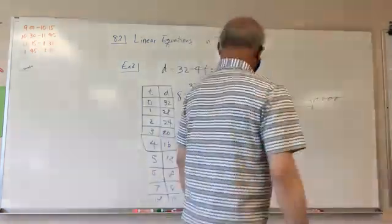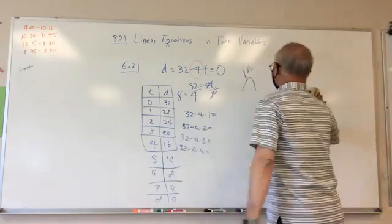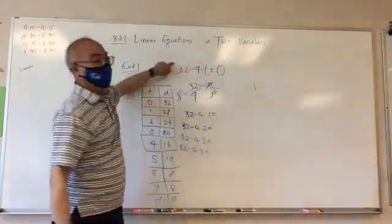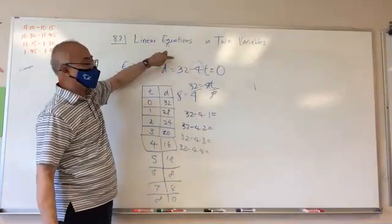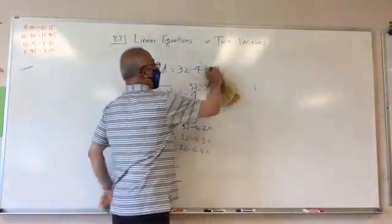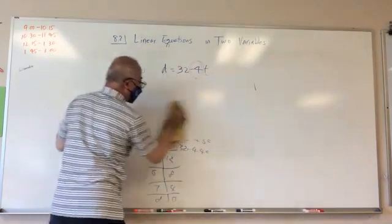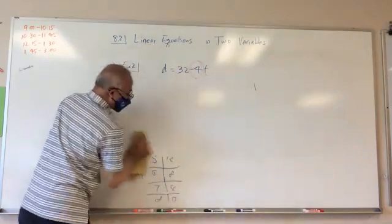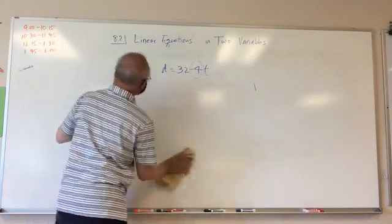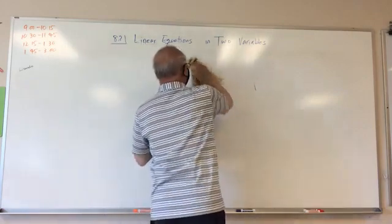So in that example, the 32 was the starting point — the initial distance from the ocean — and the negative four was the rate at which the lava approached the ocean each hour.